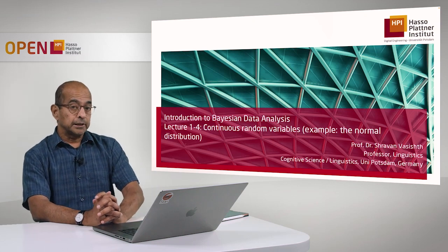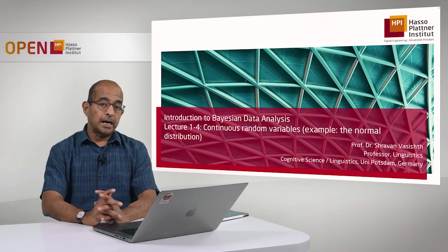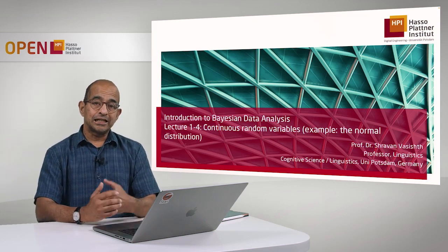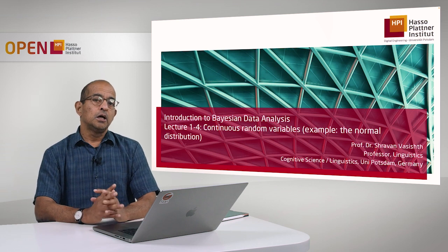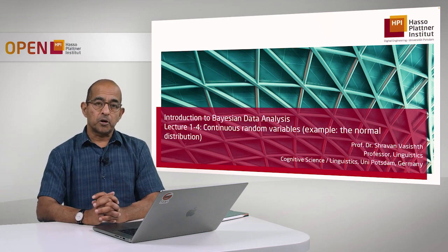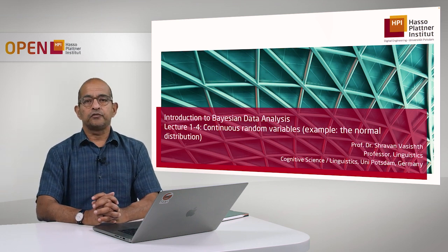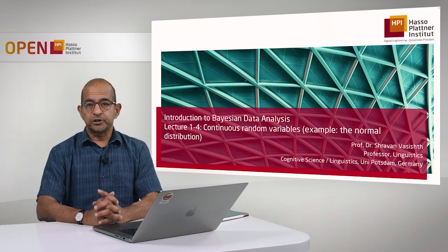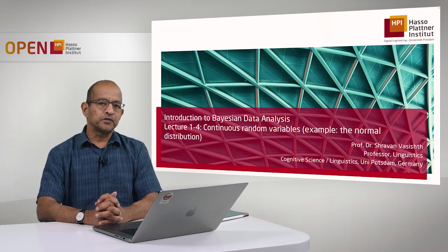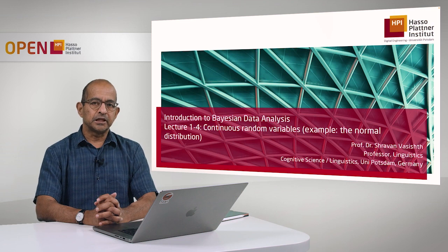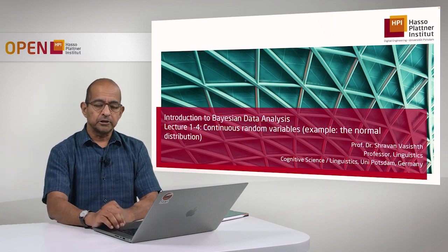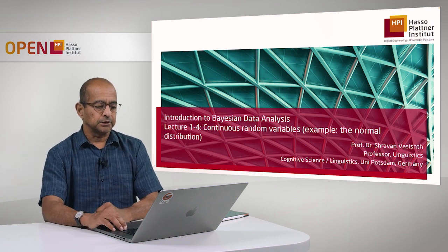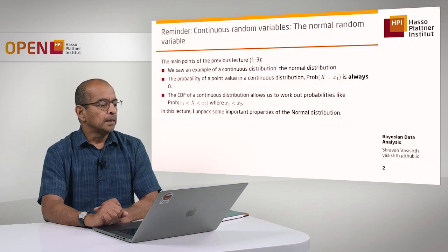In this fourth lecture, I'm going to talk a little bit more about the properties of this particular example of a continuous random variable: the normal distribution, the normal random variable.